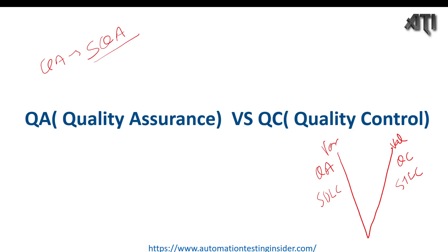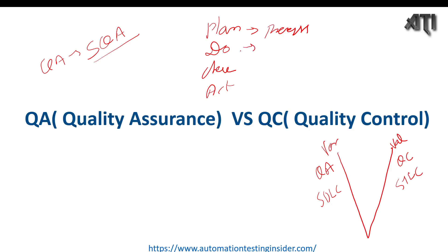Nowadays, QA has also become SQA. What are the different stages of quality assurance to make sure it is in place in any company? There are four steps: Plan, Do, Check, and Act. When planning, we plan the process-related objectives and activities to make sure all processes are in place. Do means making changes to the existing process or developing a new process. Check means monitoring the process.